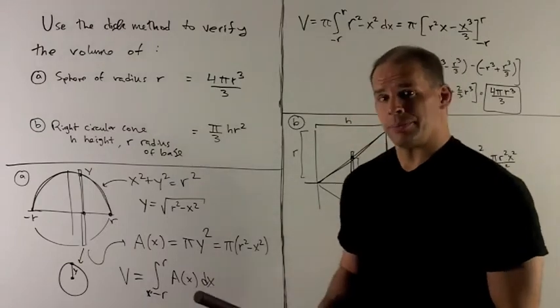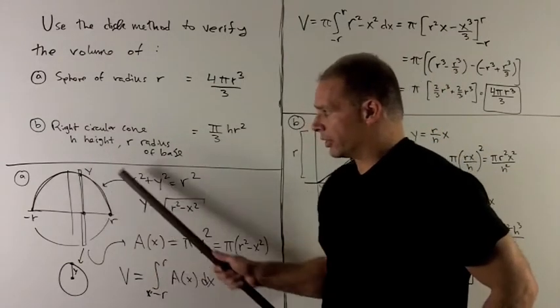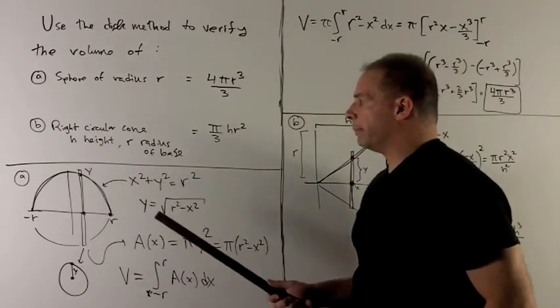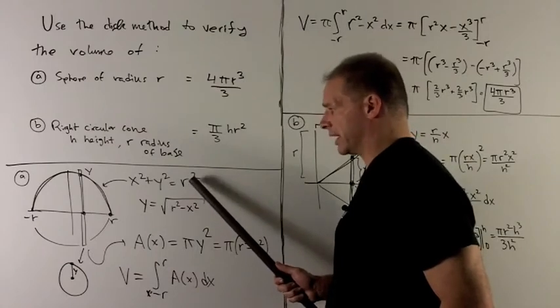So I need to know the function for the top part of the circle. Well, if I have x-squared plus y-squared equals r-squared, because we're using radius r, which is fixed,